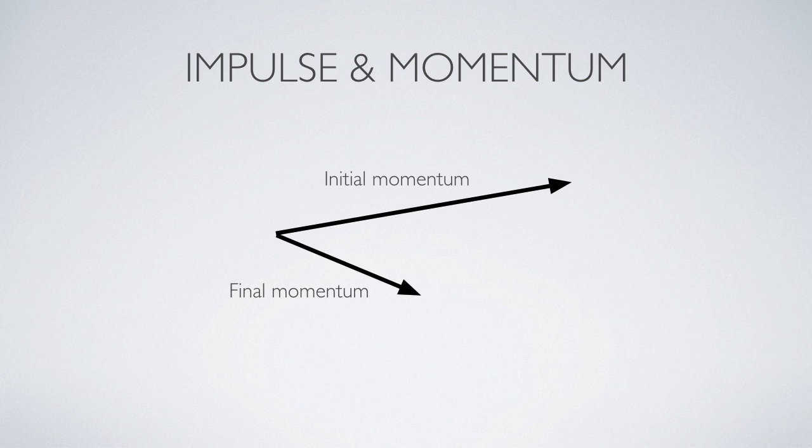Here's another scenario. I have an initial momentum vector and a final momentum vector. What does the impulse vector look like? Hit pause and try to sketch out what you think the impulse vector would look like in this case. Here's the impulse vector. Impulse is change in momentum, which means final momentum minus initial momentum. So I've drawn it there as the blue impulse vector.